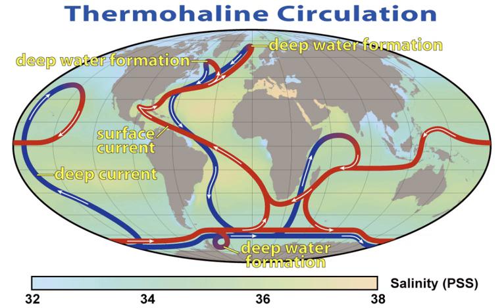The movement of surface currents pushed by the wind is fairly intuitive. For example, the wind easily produces ripples on the surface of a pond. Thus the deep ocean, devoid of wind, was assumed to be perfectly static by early oceanographers.